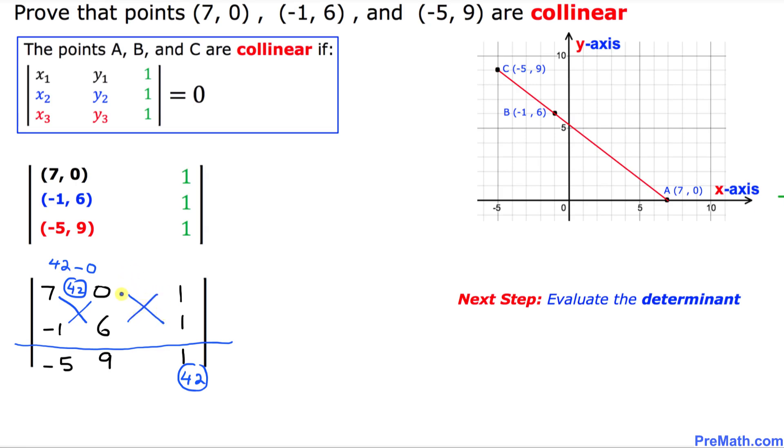Let's crisscross these numbers. 0 times 1 is 0. Then you put a minus sign. 1 times 6 is 6. So that's going to be negative 6. So negative 6 is going to show up in the opposite side over here.